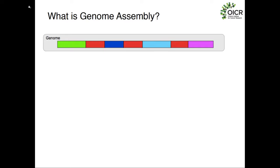Let's start off with just a really high level overview of what genome assembly is. Our genome in this case has multiple different segments, and these red segments might represent repetitive sequence — sequences present in multiple copies throughout the genome — which as we're going to talk about gives problems to our assembly.